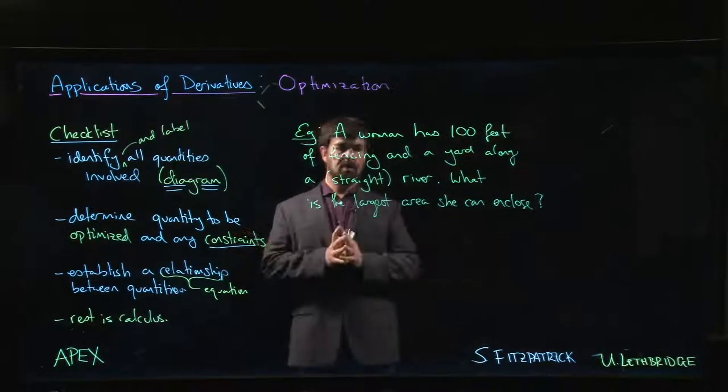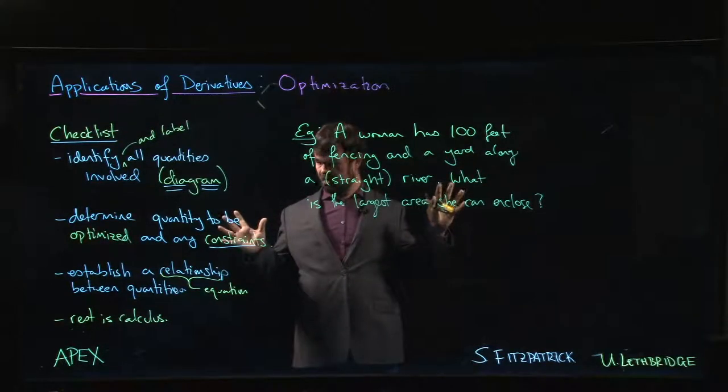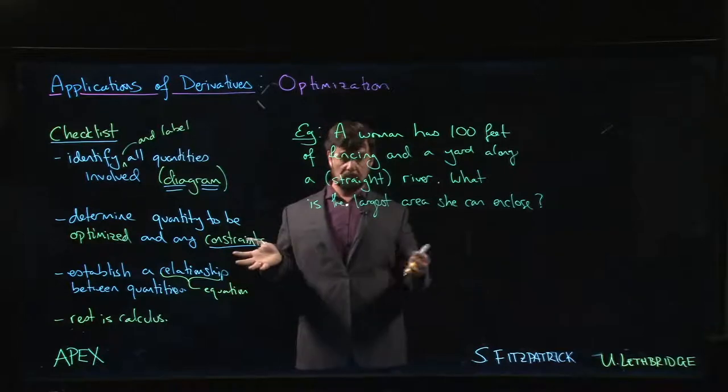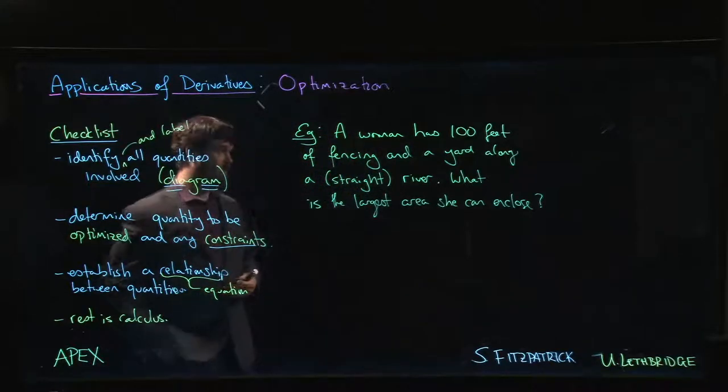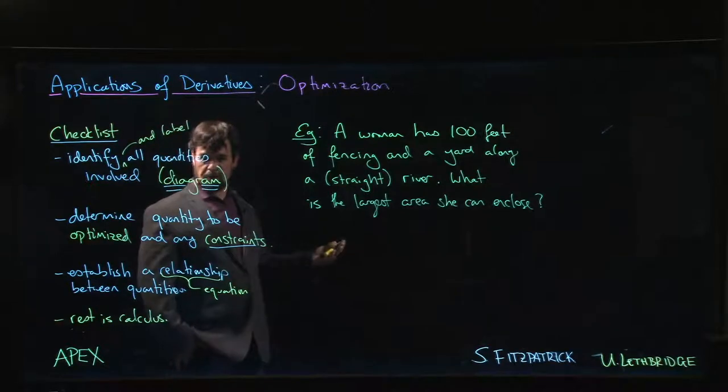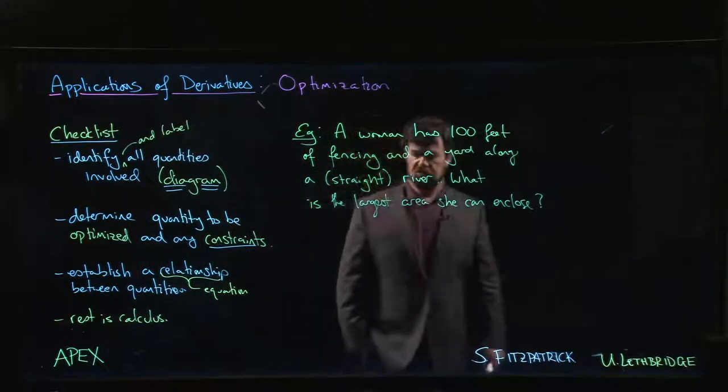Alright, so here's one of our examples from the textbook. We have a woman with 100 feet worth of fencing, so I guess she's already gone to the store, that's how much she could afford.